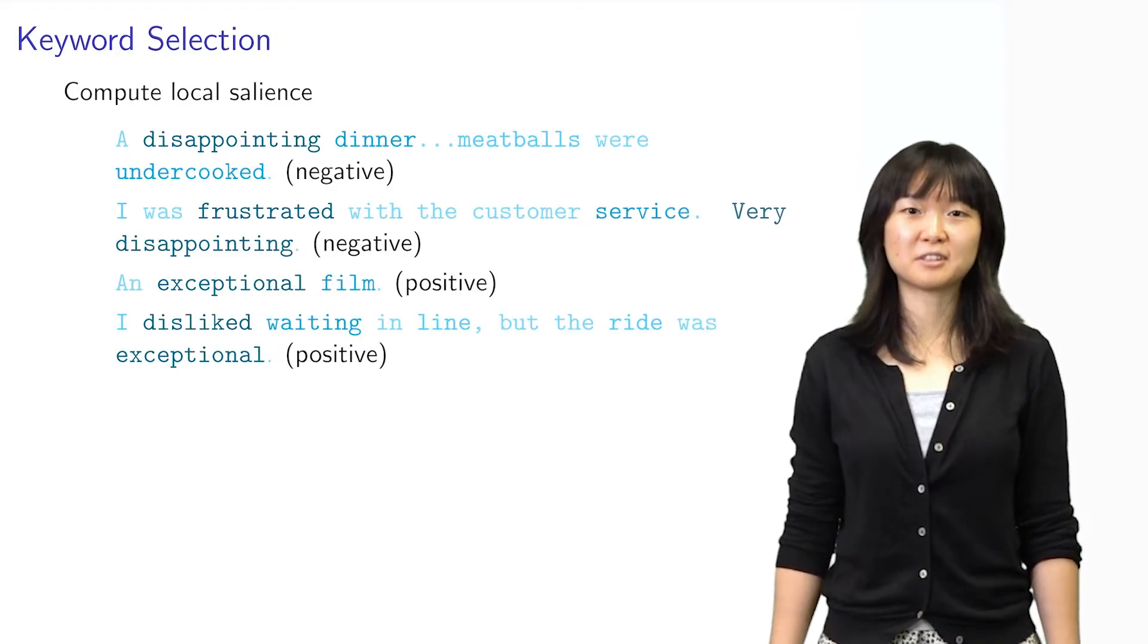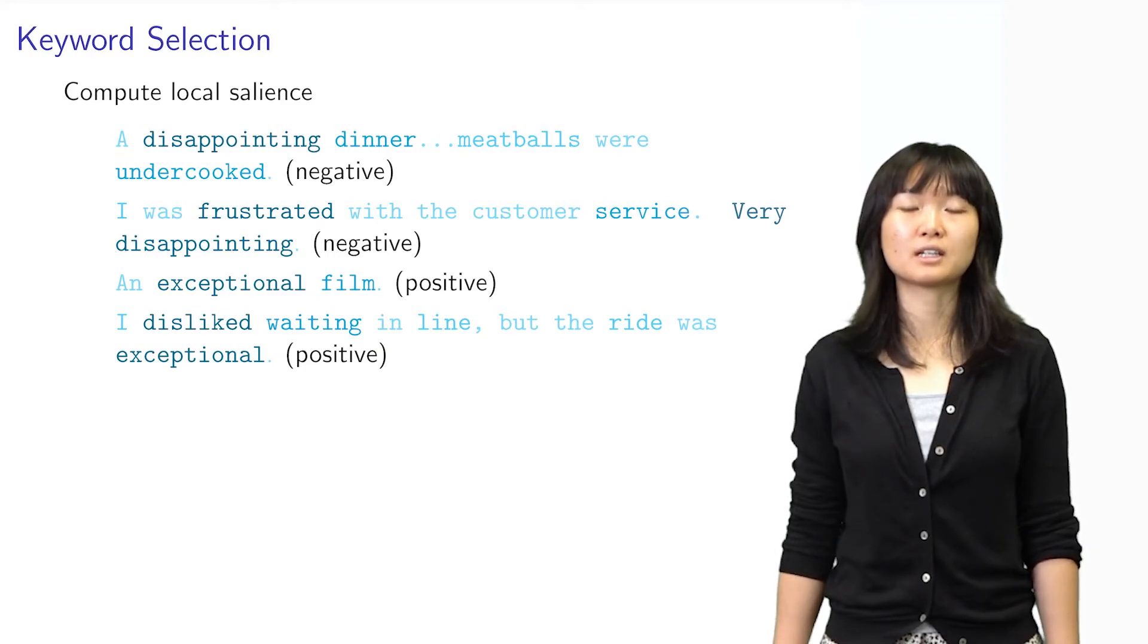Now, we compute local salience for each word in the context of the sentence that it belongs to. Here, words like frustrated, disappointing, and exceptional have high local salience.